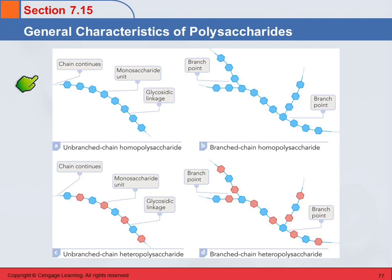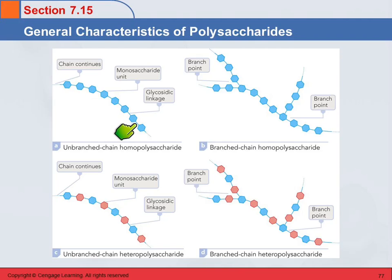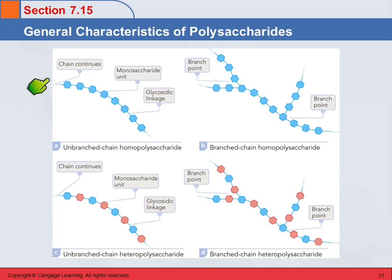This is an illustration of an unbranched homopolysaccharide. All of the units in it are the same — these little blue hexagons — and they have the same kind of glycosidic linkage, and the chain just continues as one long chain.